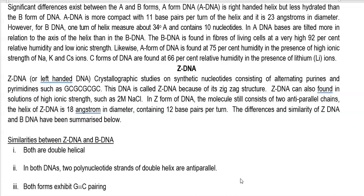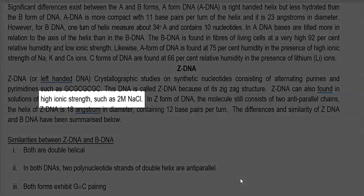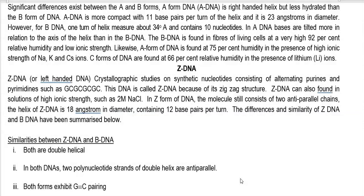Z-DNA can also be found in solutions of high ionic strength such as 2 molar sodium chloride. In the Z form of DNA, the molecule still consists of two anti-parallel chains, as in the A and B forms. However, the helix of Z-DNA is 18 Angstroms in diameter, allowing around 12 base pairs per turn.